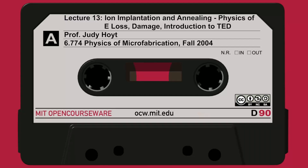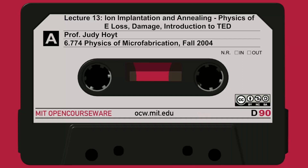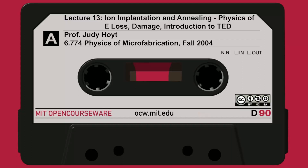Now, what happens to those 10¹⁵ excess interstitials if I implant 10¹⁵ phosphorus atoms? They coalesce and get together into little defects called, in curly brackets, {311} defects — and we'll talk about those in detail next time. These little clusters are defects that end up being stable for very long periods — they can stay around for 10 seconds, 100 seconds, maybe even minutes and hours depending on the temperature. It's these little {311} defects that end up being responsible for the process of transient-enhanced diffusion, which we're going to model in the next lecture.